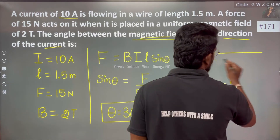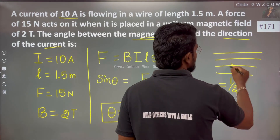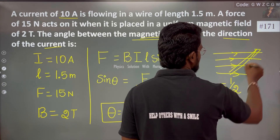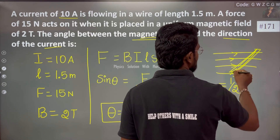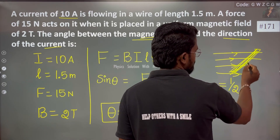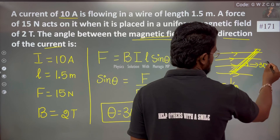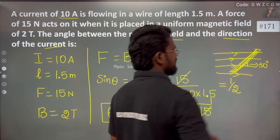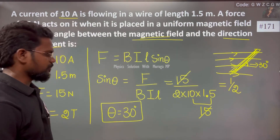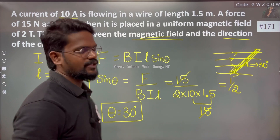If we look at the magnetic field, the magnetic field in the conductor is inclined like this — it forms an angle with the direction of the current. It's a very easy problem.